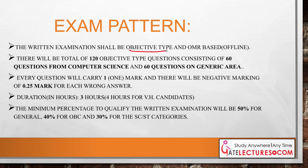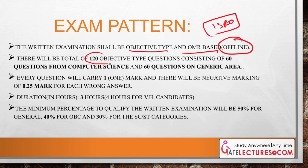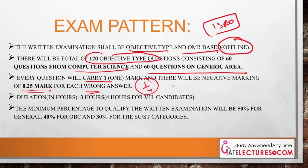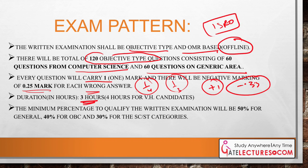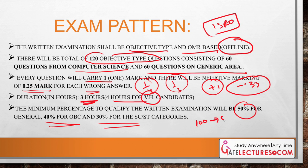The NIELIT exam pattern consists of an objective type OMR-based offline examination — unlike ISRO which is online. There are 120 objective type questions in total: 60 questions from Computer Science and 60 questions from generic areas such as aptitude, reasoning, and general studies. Each question carries 1 mark with negative marking of 0.25 marks for each wrong answer. The duration is 3 hours, or 4 hours for visually handicapped candidates. Minimum qualifying marks are 50% for General, 40% for OBC, and 30% for SC/ST categories.